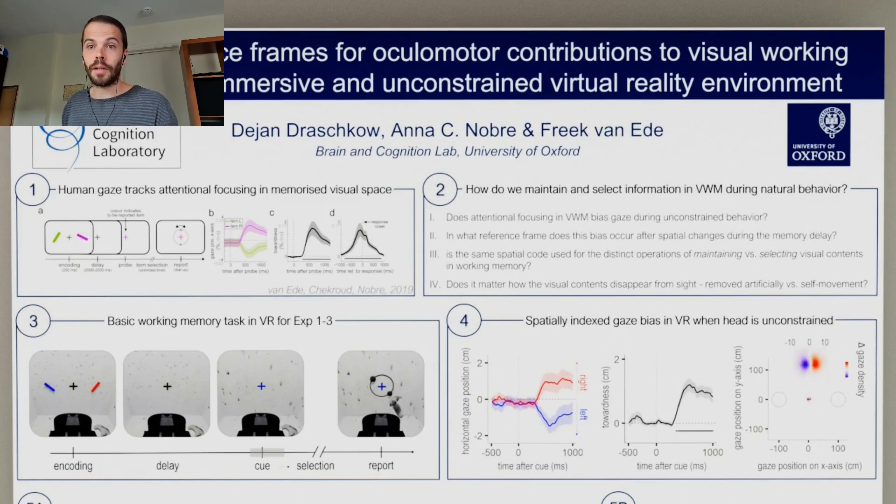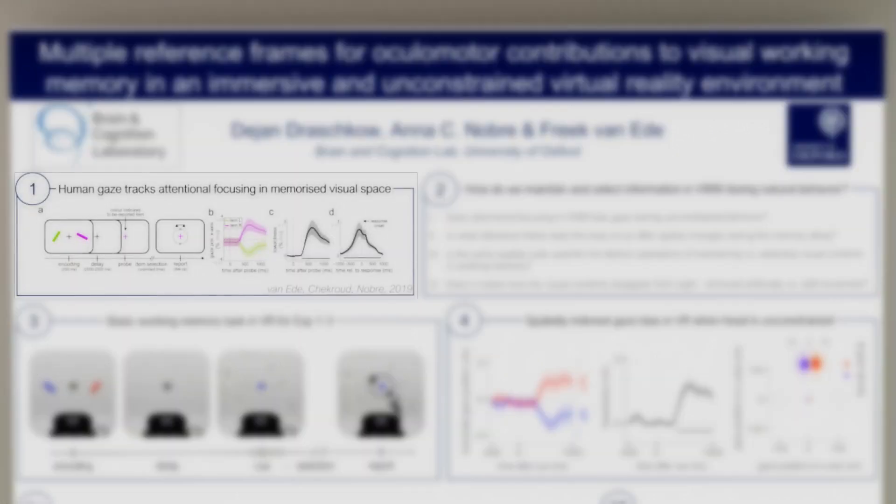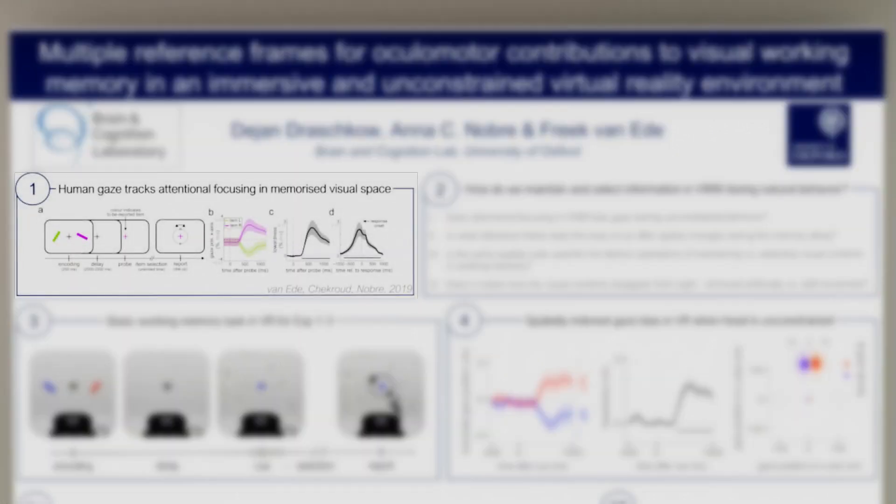The oculomotor system not only seems to contribute to directional gaze biases when directing attention in external visual space, but also tracks memorized visual locations.